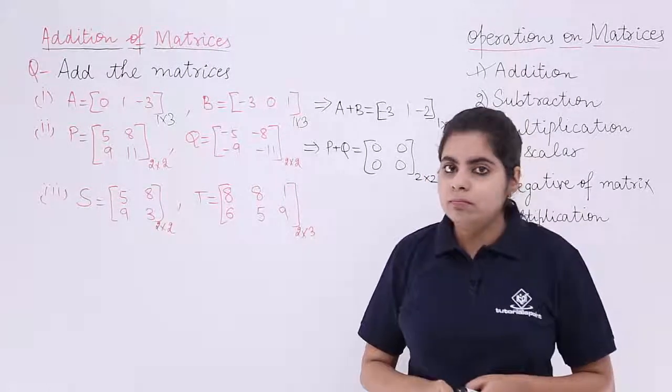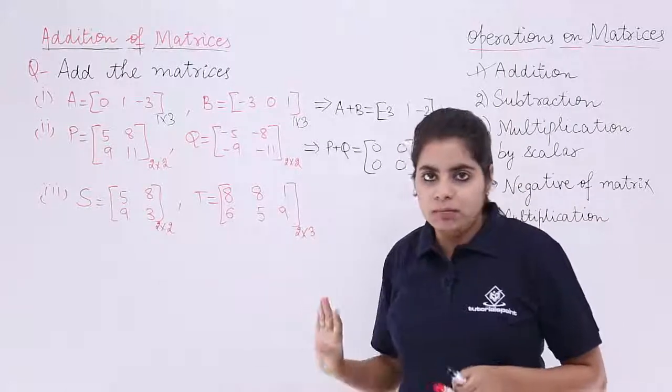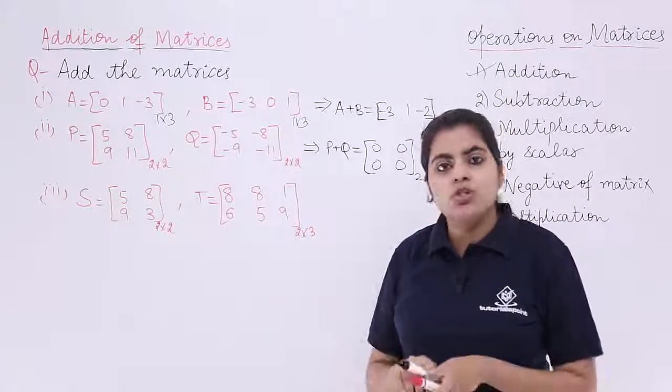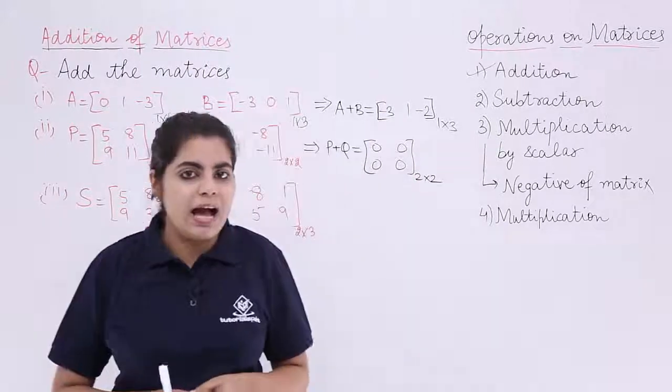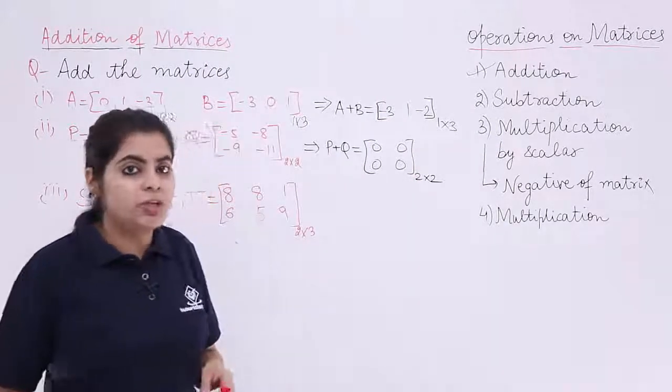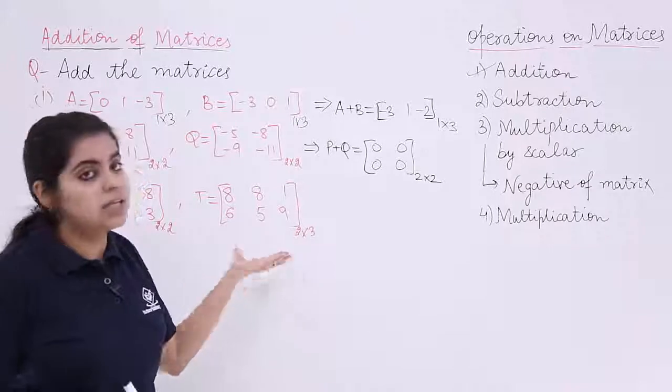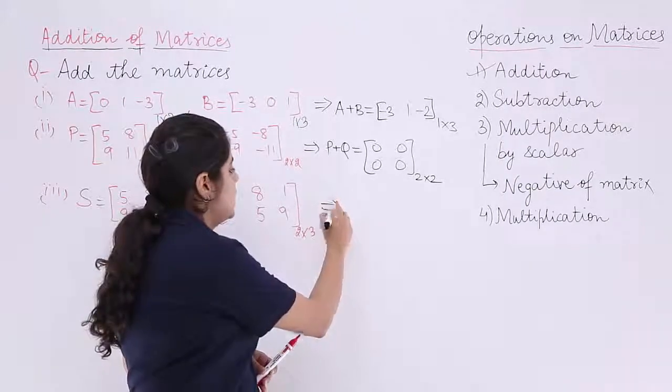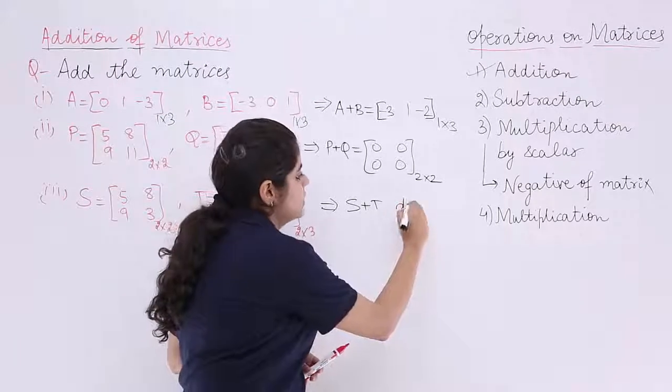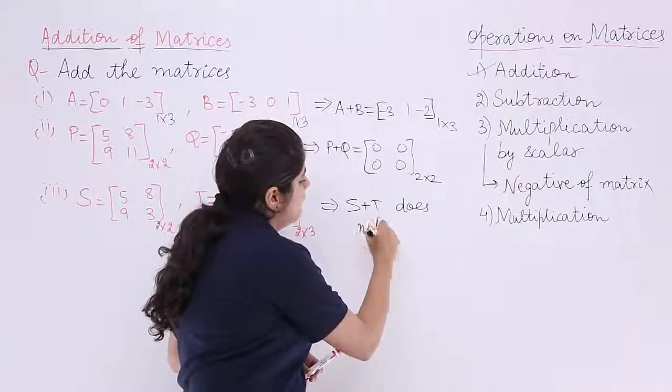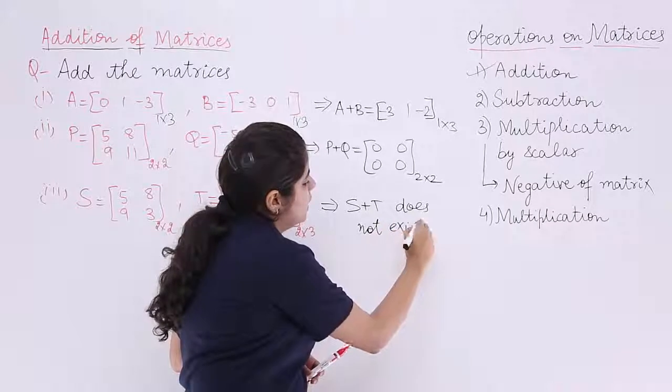Are these orders same? Yes, the rows are same but the columns are not. So, the order is not same. Since the order is not same, can we add? No, addition operation cannot be performed when the orders are different. So, I say that my S plus T, no, it does not exist. So, I would say S plus T does not exist.